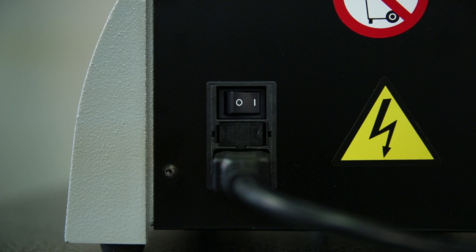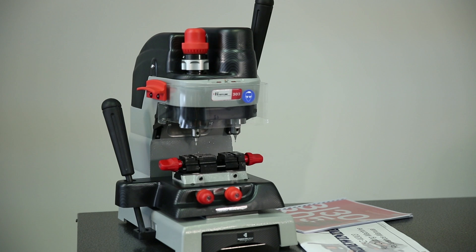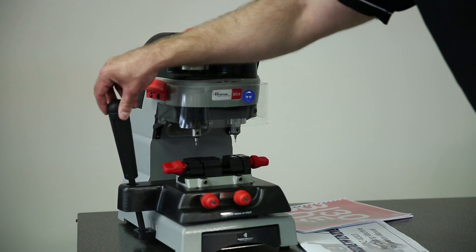The main power switch is located on the back side of the machine, just above the power cord. The table handle is located on the left side of the machine and is used to move the table during the cutting process.